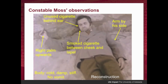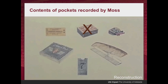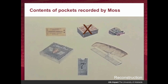Moss also reported that the body was cold, damp, and stiff, and there was no vomit. The contents of the pockets Moss reported were: the unused train ticket, the bus ticket, two combs — one aluminium, one plastic. The aluminium one is said to be of American origin because Australia didn't have aluminium combs at the time. There was Juicy Fruit chewing gum and Army Club cigarettes — though interestingly the contents of the packet weren't Army Club, they were Kensitas cigarettes instead. Notably, Moss doesn't report a box of matches on the dead body.